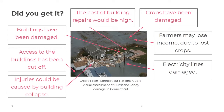We're now ready to mark your work. You needed to identify four effects of tropical storms from the photograph. On screen you'll see the two I used as examples, and the others in pink are additional ideas. Crops have been damaged; the cost of building repairs would be high; buildings have been damaged; access to buildings has been cut off; and injuries could be caused by building collapse. You may have other ideas too — add any additional thoughts to your work.